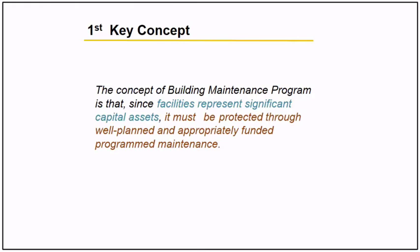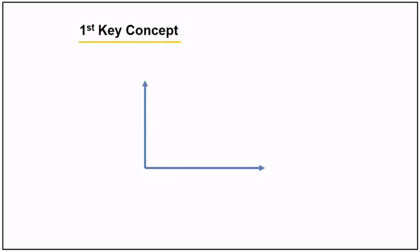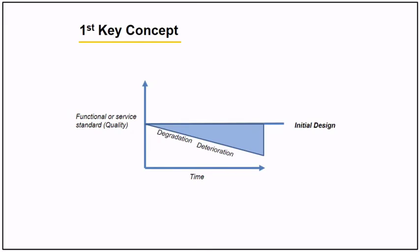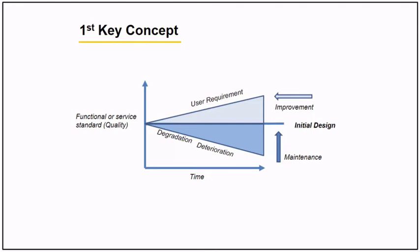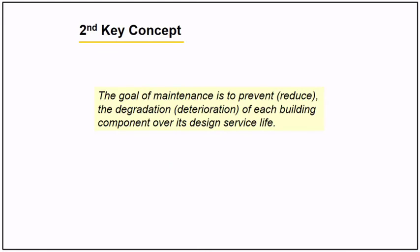Here's the graphical representation of the first concept. Equipment or asset is graphed on the y-axis for its functional service against time. This horizontal line is the initial design of the equipment. Over time, deterioration and degradation happen. Our role in engineering is to execute maintenance based on our requirements, which will result in improving the life of the equipment.